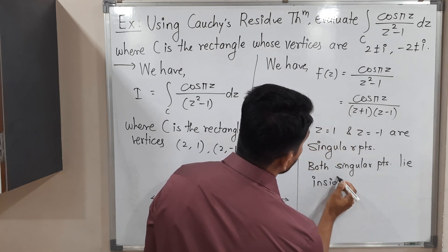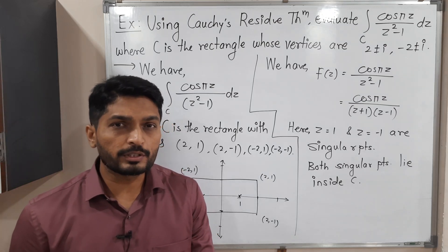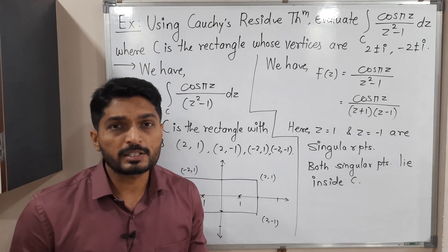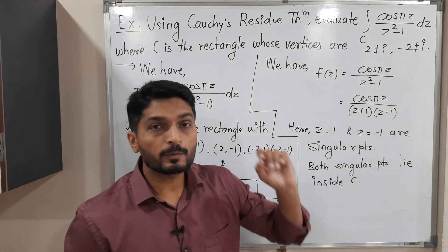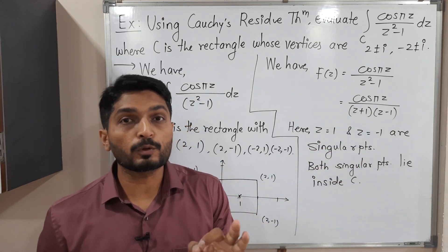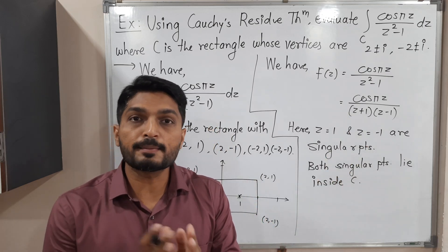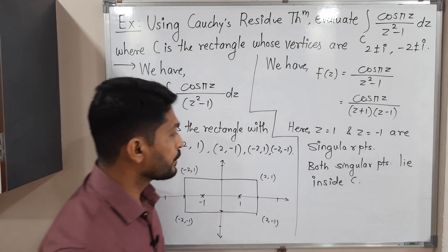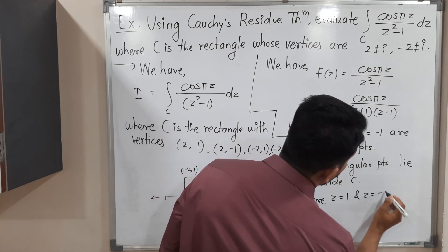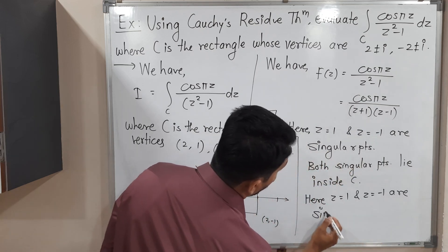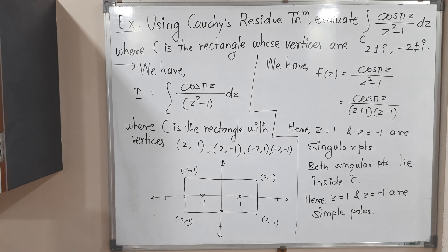Both singular points lie inside C, so we have to find the residue at both points. Since both factors (z-1) and (z+1) appear with power one in the denominator, z = 1 and z = -1 are simple poles. We can use the simple formula to calculate the residue at each.